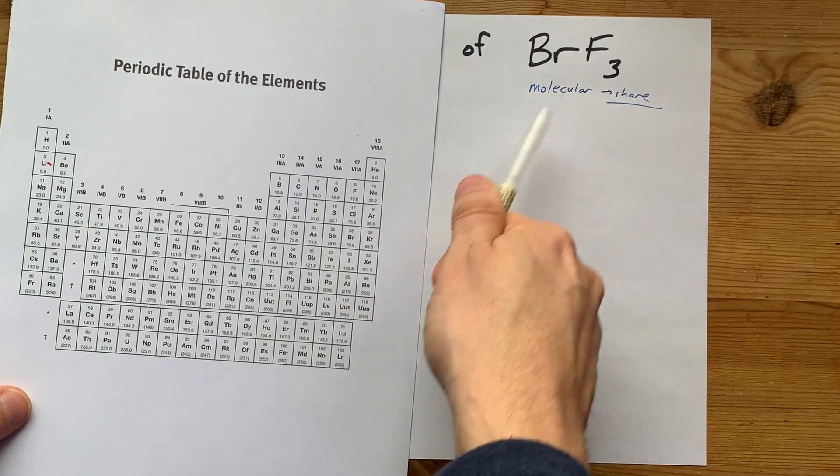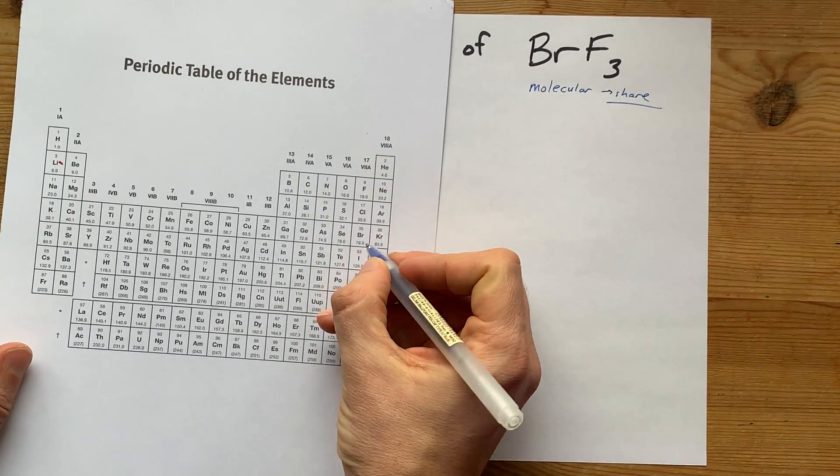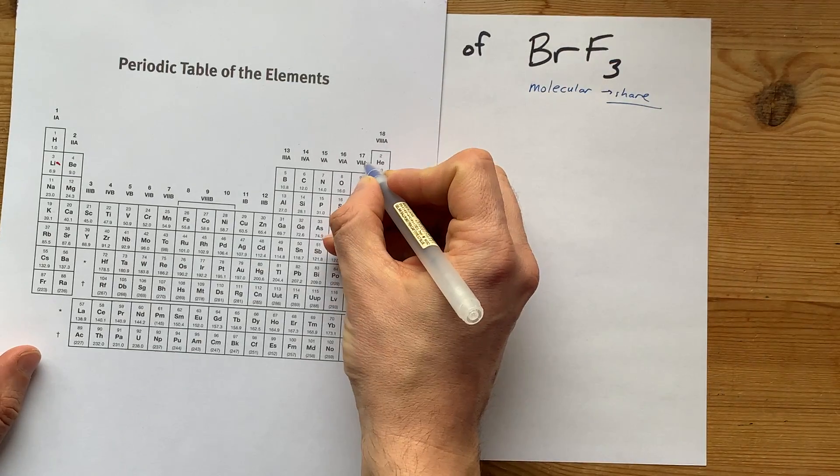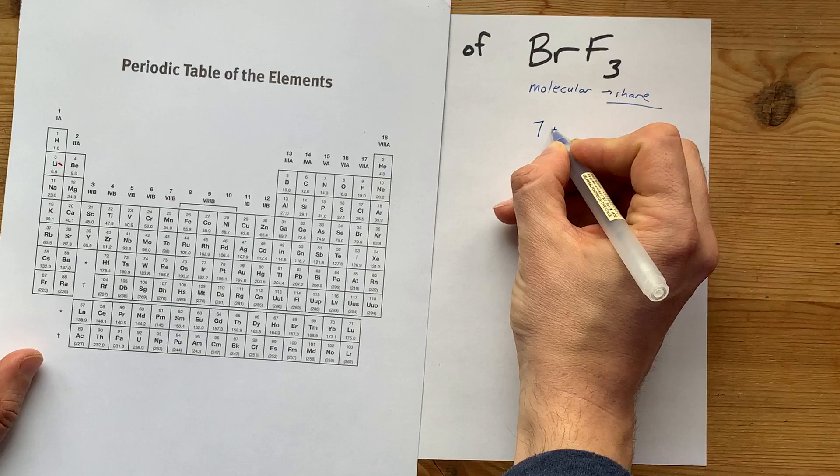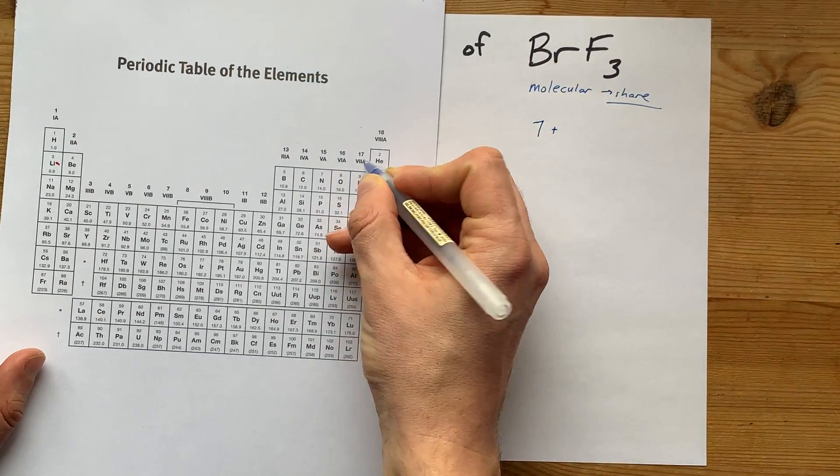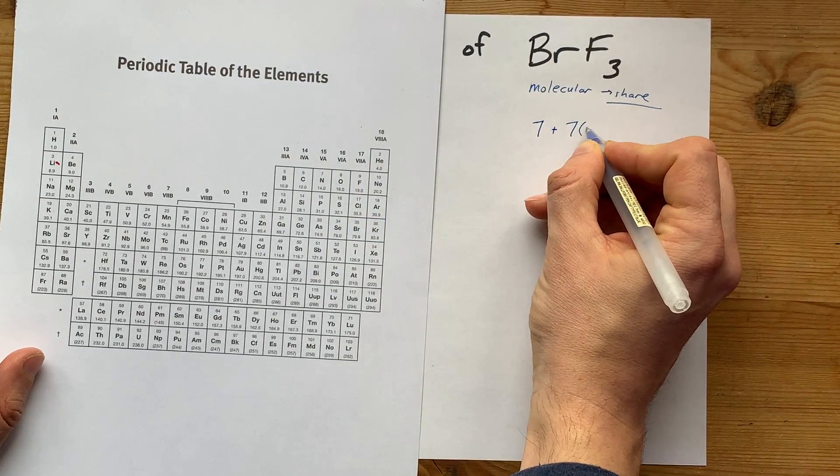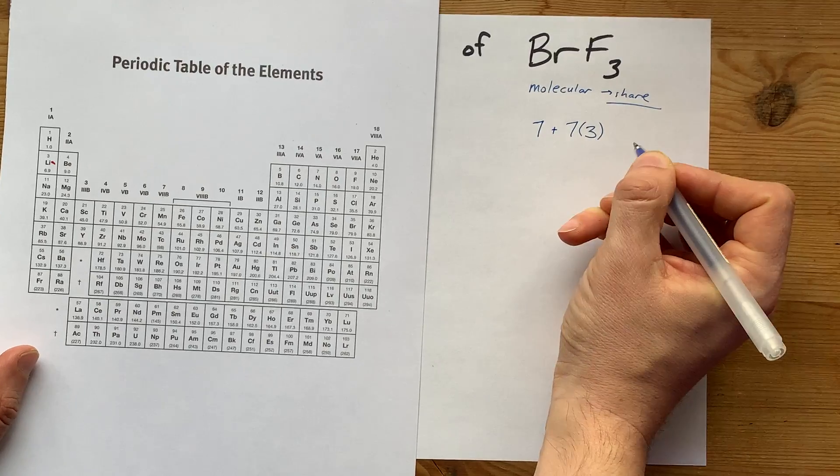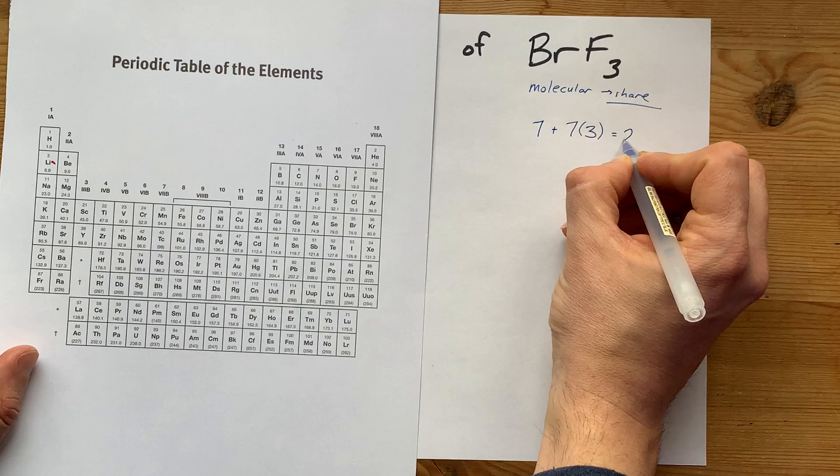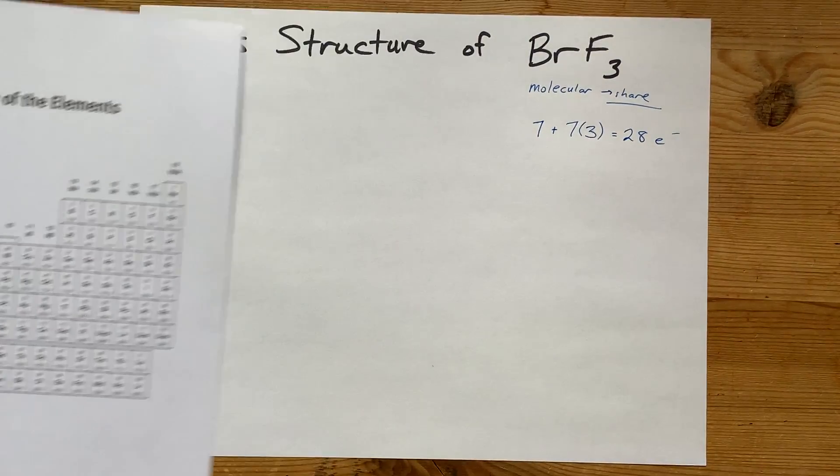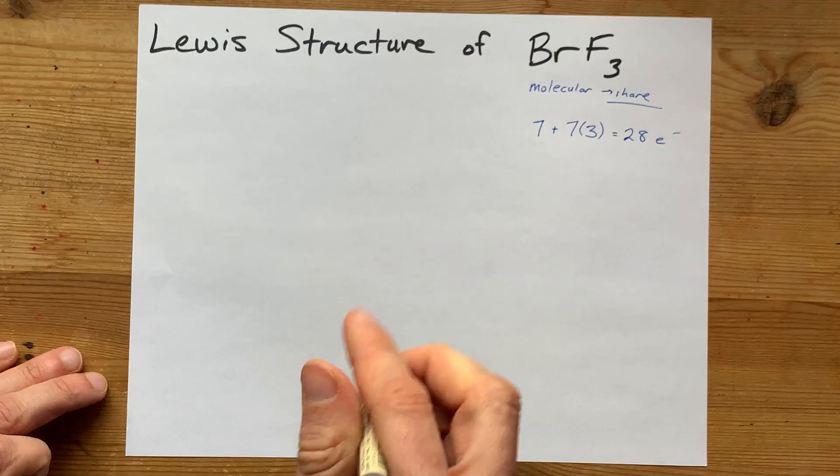How many valence electrons are we even dealing with here? Well, bromine in group 17 brings 7 valence electrons. And each fluorine also brings 7 electrons, but there are 3 of them. 7 times 3 is 21, plus the extra 7 is 28 valence electrons total. Now we can begin to draw.